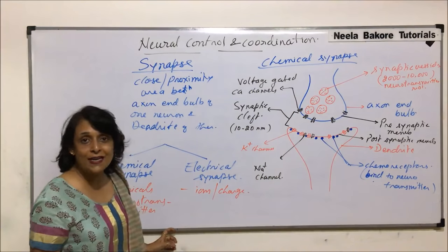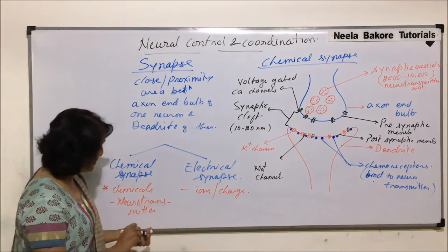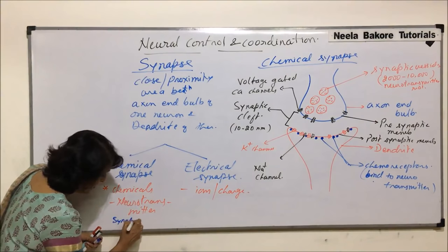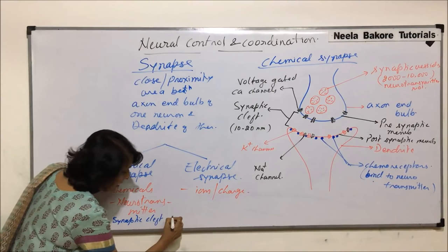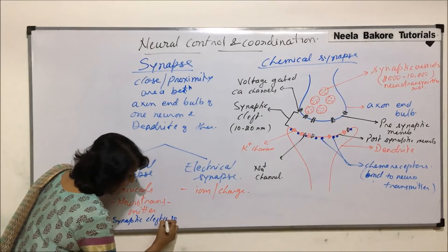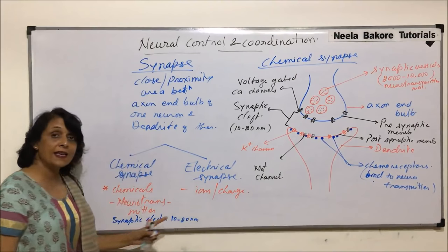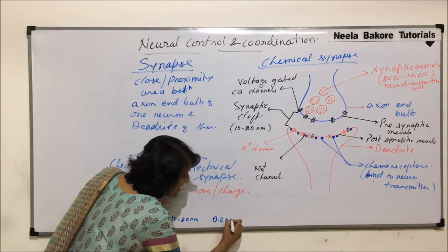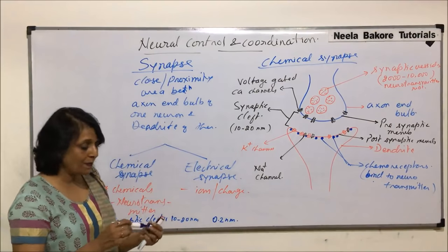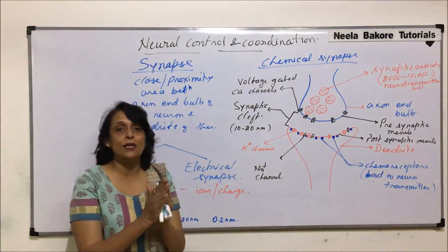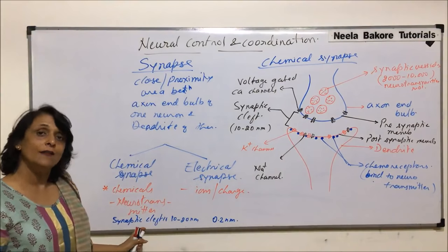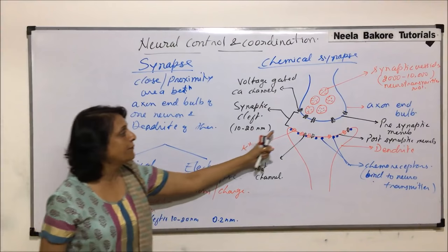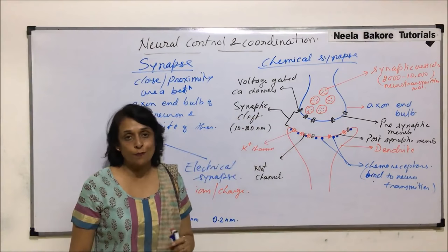The gap between the axon end bulb and the dendrite is known as the synaptic cleft. In chemical synapses, this gap is 10 to 20 nanometers, whereas in electrical synapses it is 0.2 nanometers — meaning they are very very close to each other compared to chemical synapses. This is one key structural difference between the two types.